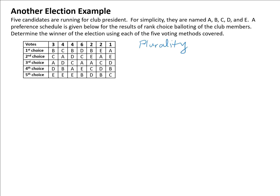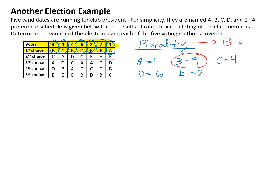Plurality is just about looking at first choice votes, so we're only going to look at those. Looking at each candidate in turn: A only has one vote. B has votes in several places — three people, four people, and two more — so that's nine altogether. C has four people who voted for them, D has six, and E had two votes. Plurality goes to whoever has the most votes, and B has the most, so B wins with plurality.